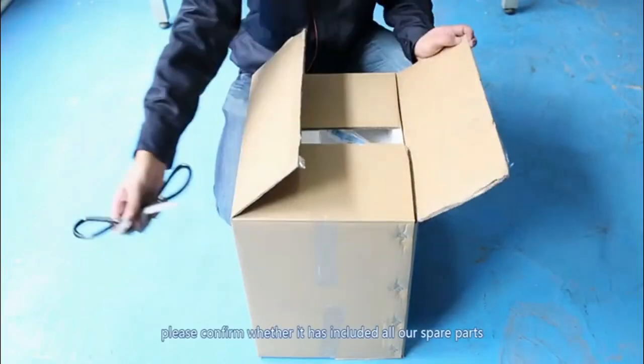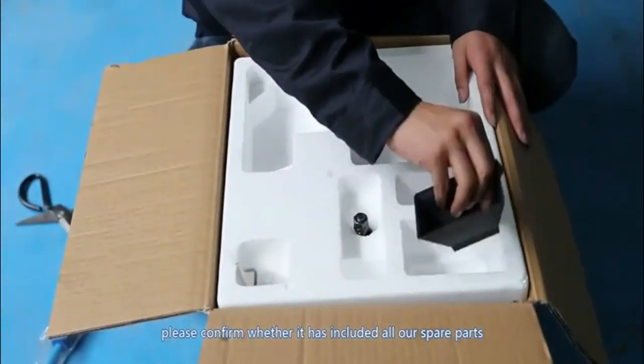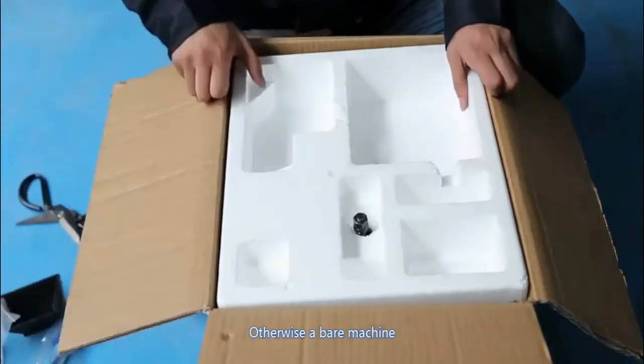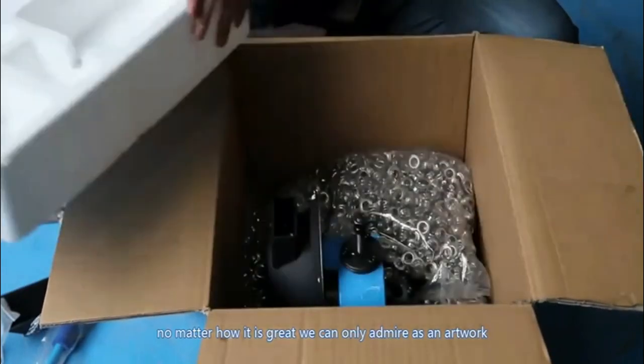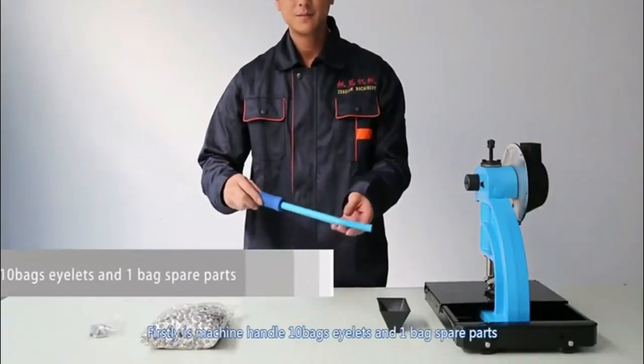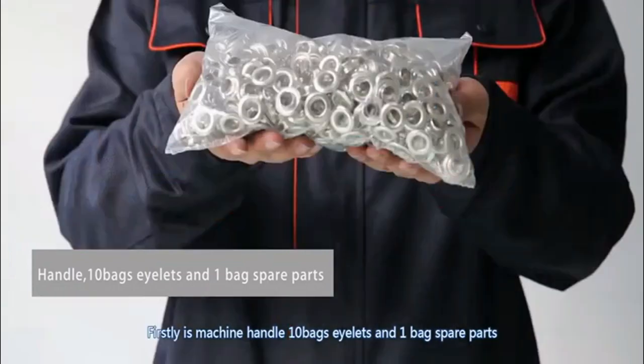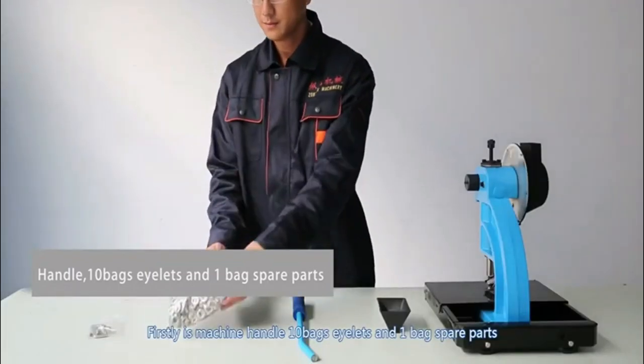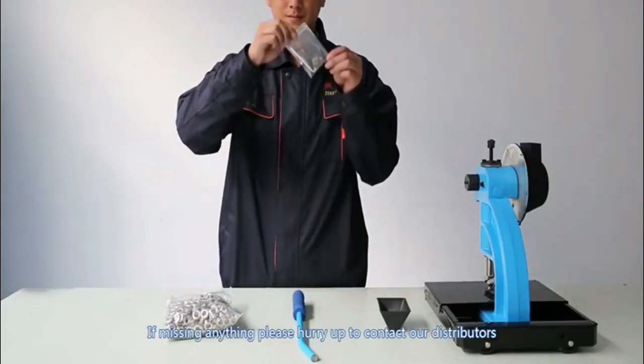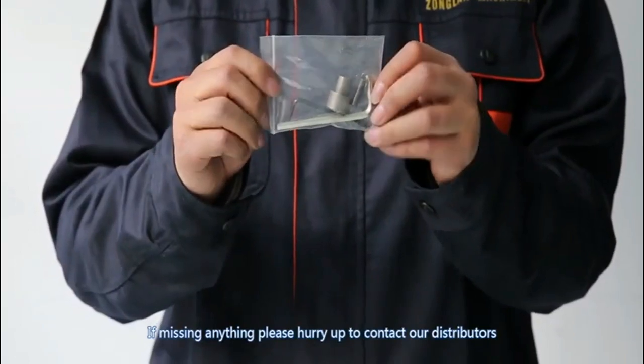When you get the machine, please confirm whether it has included all our spare parts. Otherwise, a bare machine, no matter how great, we can only admire as an artwork. First is machine, handle, 10 bags eyelet, and 1 bag spare parts. If missing anything, please hurry up to contact our distributors.